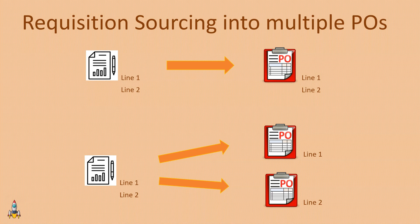This scenario is quite possible, and there are certain rules in the PeopleSoft system which decide whether a requisition with multiple lines should source into just one single PO, or the lines should be split across multiple POs. That's the topic for today, in which we will understand what setup is required to achieve this functionality. We will see two scenarios in which a multi-line requisition can source into multiple purchase orders. Alright, this is Samir, and without further delay let's start the discussion.